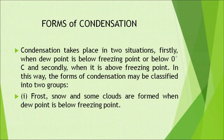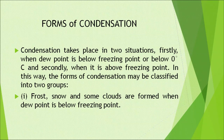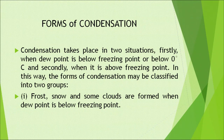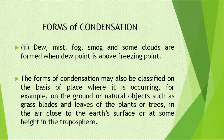The forms of condensation depend on whether the dew point is below or above freezing point. Condensation takes place in two situations: when dew point is below freezing point (below 0°C), and when it is above freezing point. Accordingly, condensation forms are classified into two groups: frost, snow, and some clouds form when dew point is below freezing point; dew, mist, fog, smog, and some clouds form when dew point is above freezing point.